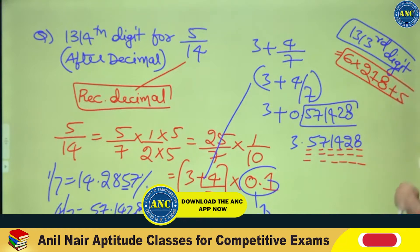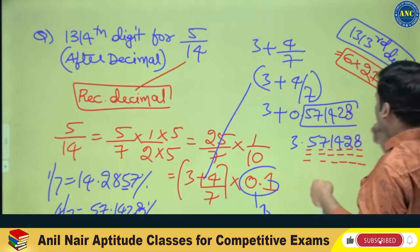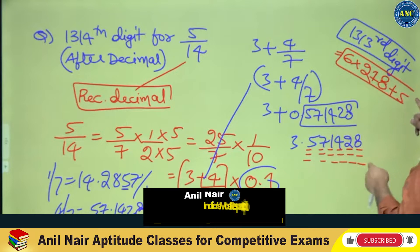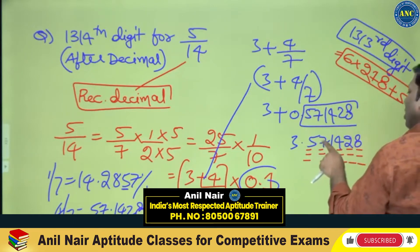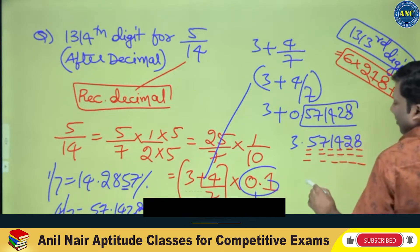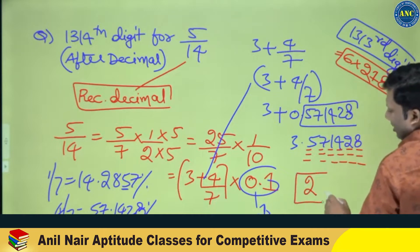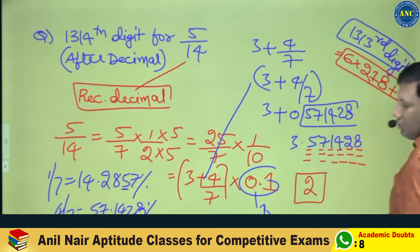This loop of 6 digits — 571428 — will keep repeating. The 5th digit I require: 5, 7, 1, 4, 2 — the 5th digit is 2. Answer is 2.